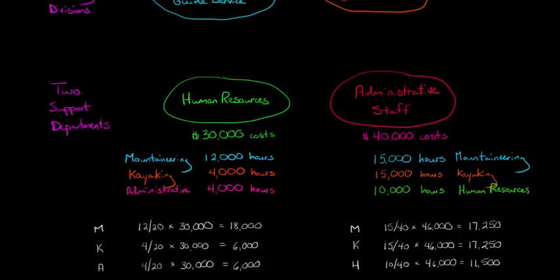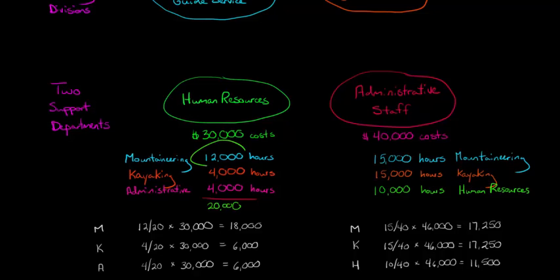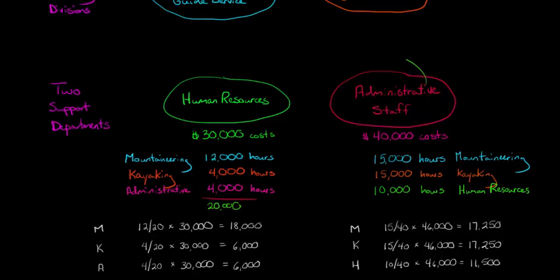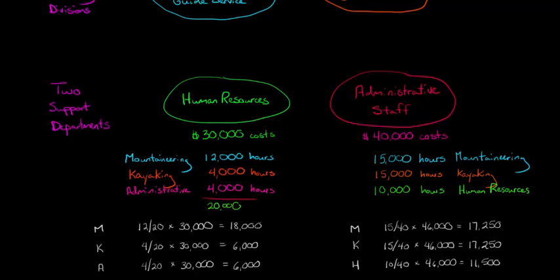I want to show you the long way so you understand the concept. The HR department provides a total of 20,000 hours of service. The mountaineering department uses 12,000 of those hours, kayaking uses 4,000, and the admin staff uses 4,000. So now we're trying to allocate these $30,000 in costs from HR.